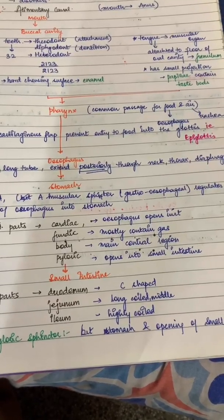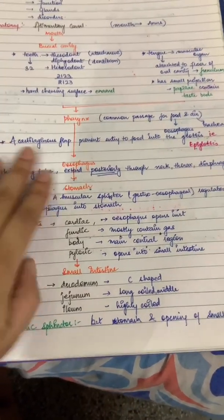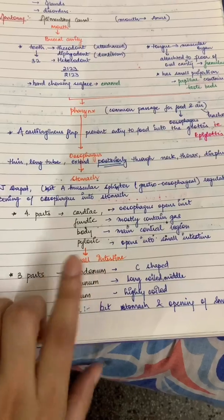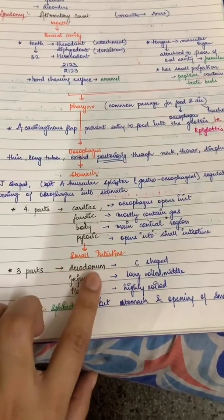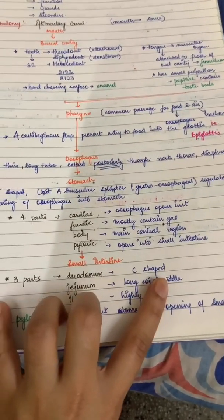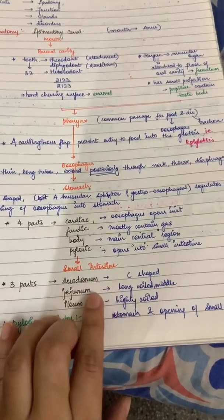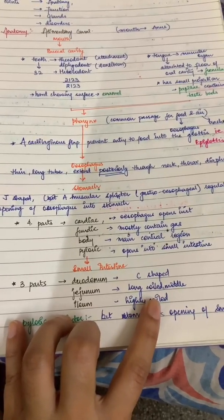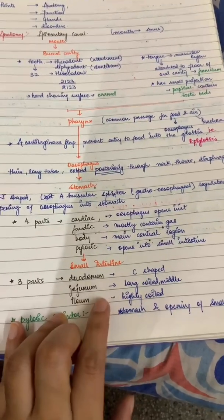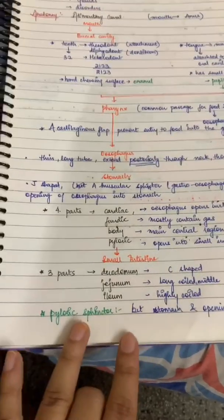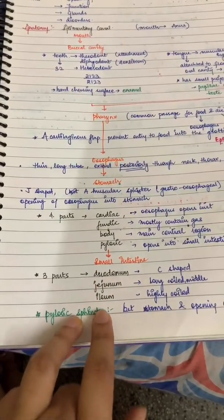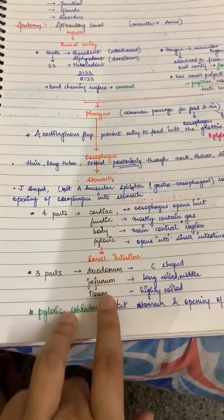After the stomach we come to the small intestine, which has three parts: duodenum, jejunum, and ileum. The duodenum is C-shaped. The jejunum is the long coiled middle part, and the ileum is the highly coiled terminal part. There is also a pyloric sphincter that regulates the passage of food from the stomach into the small intestine.